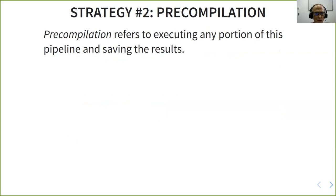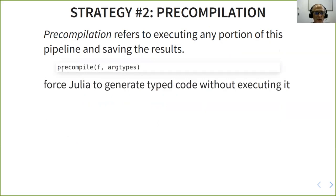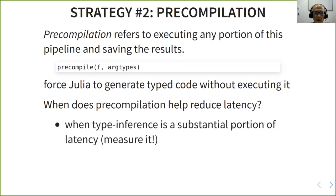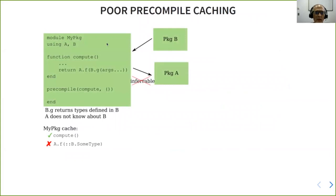I want to turn to the second strategy that you can use to reduce latency and that is by pre-compilation. So pre-compilation generally refers to executing portion of your pipeline and saving the actual code that gets generated. The most famous example of this is precompile which allows Julia to generate type code. The question is when does this help reduce latency? And so it helps when that code ends up getting saved to disk. But it also of course only helps if type inference is a substantial portion of your latency. So if you've measured this and you've convinced yourself that it is then this might be worth exploring. But it doesn't always work, and I want to give you a simple explanation of why it doesn't always work.